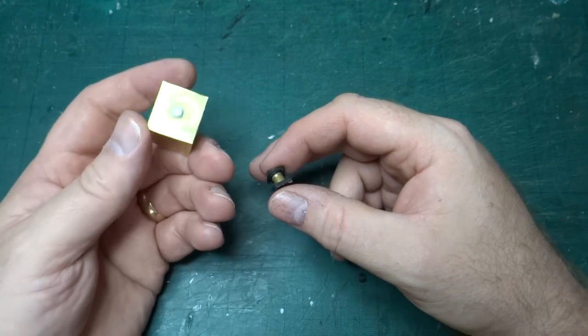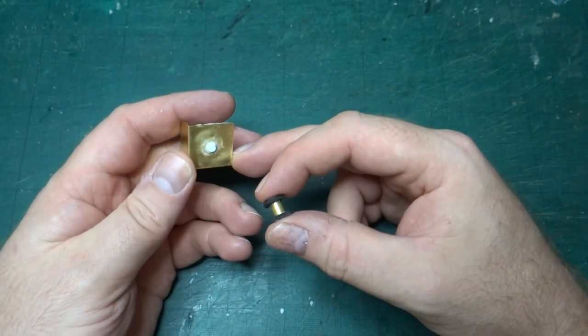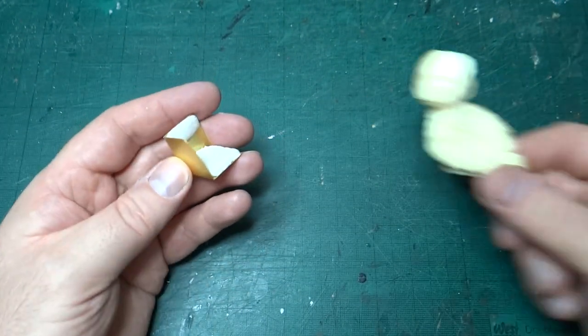What I might do is print a slightly bigger piece, maybe I don't know, square or something that will be a bit better kind of register, you know, bigger area to glue onto the model so it doesn't get knocked off. But for now that tiny little bit of plastic is doing its job.